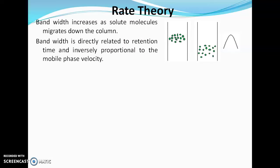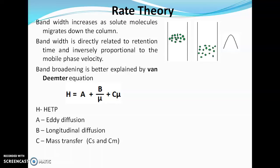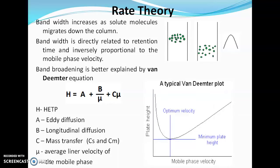When a broad band is eluted from the column, the peak will be broad with more peak width. Bandwidth is directly related to retention time and inversely proportional to mobile phase velocity. Band broadening is better explained by the Van Deemter equation: H = A + B/μ + Cμ, where H is HETP, A is eddy diffusion, B is longitudinal diffusion, C is resistance to mass transfer, and μ is the average linear velocity of the mobile phase.